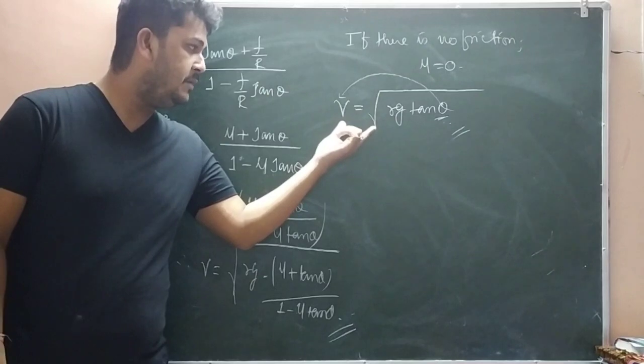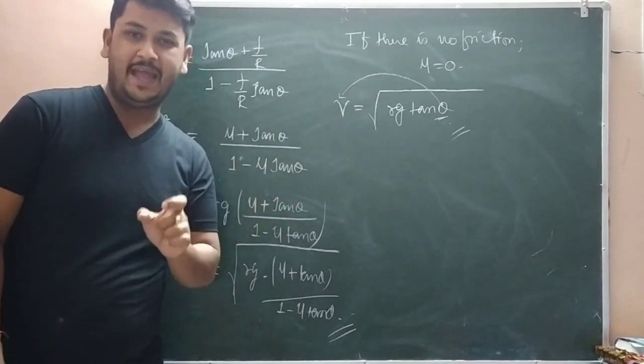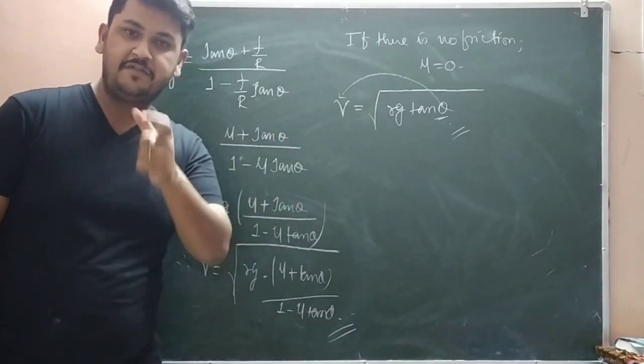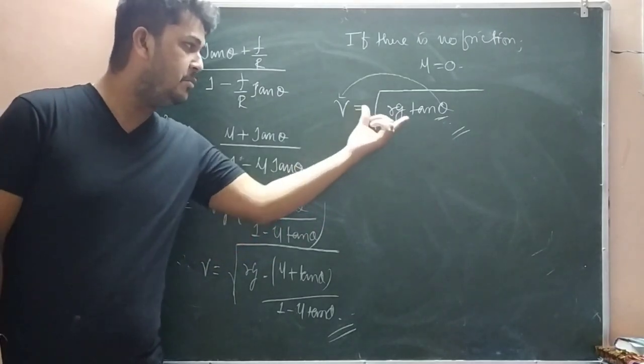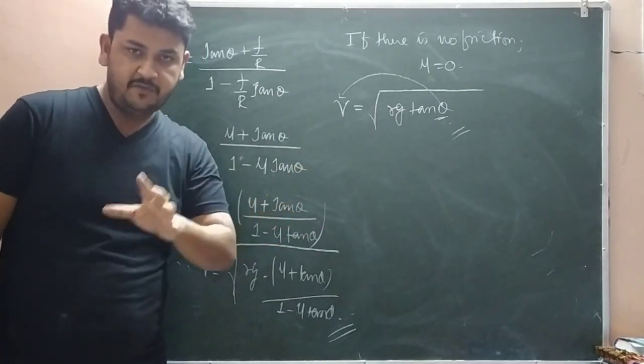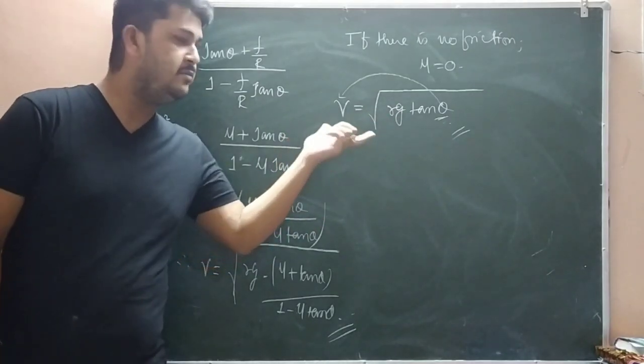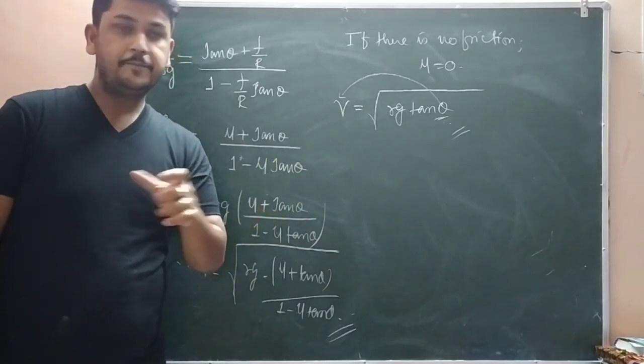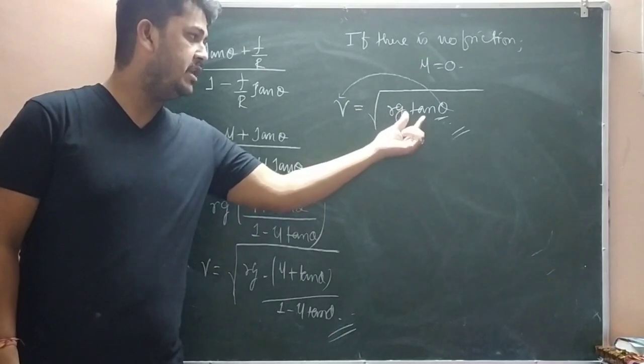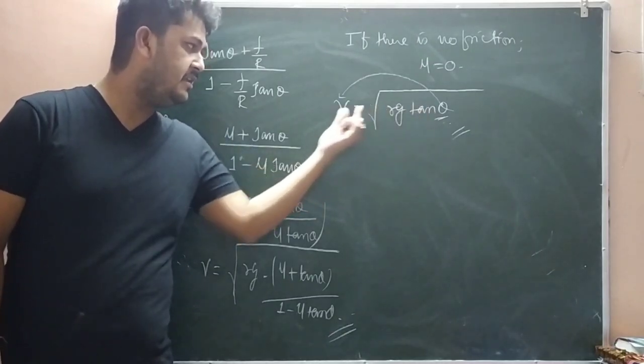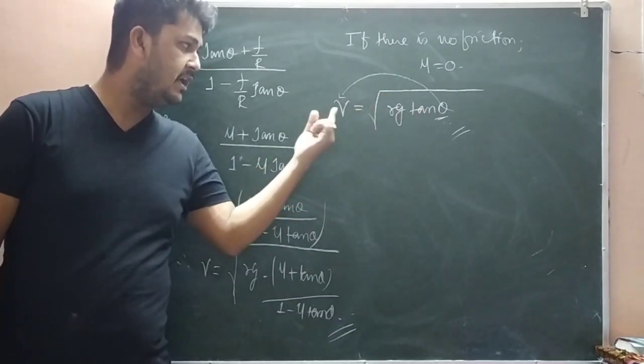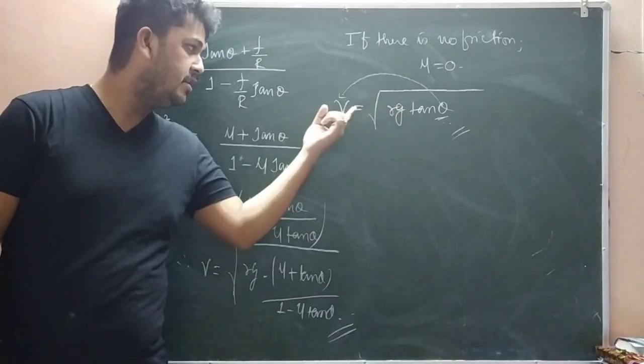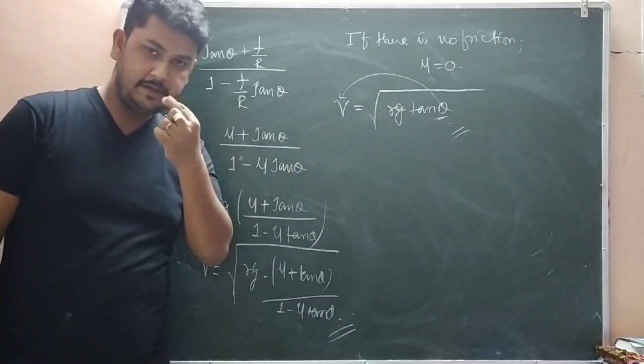So this velocity formula - we have one more topic: bending of cyclist. In bending of cyclist also, the velocity formula is the same. From this we can find theta: remove the root and rearrange, theta equals tan inverse v²/rg.